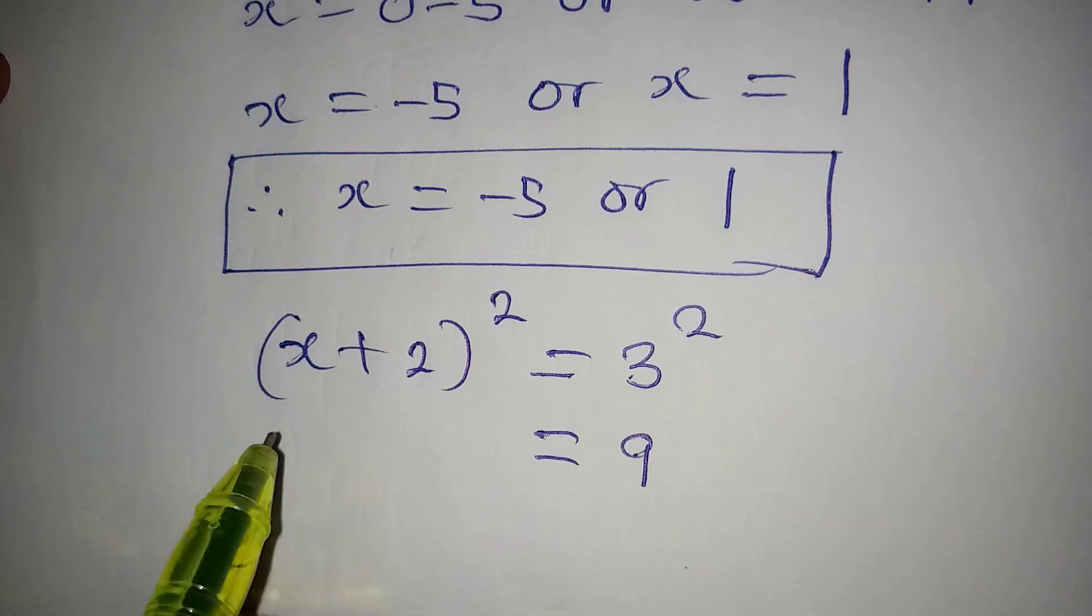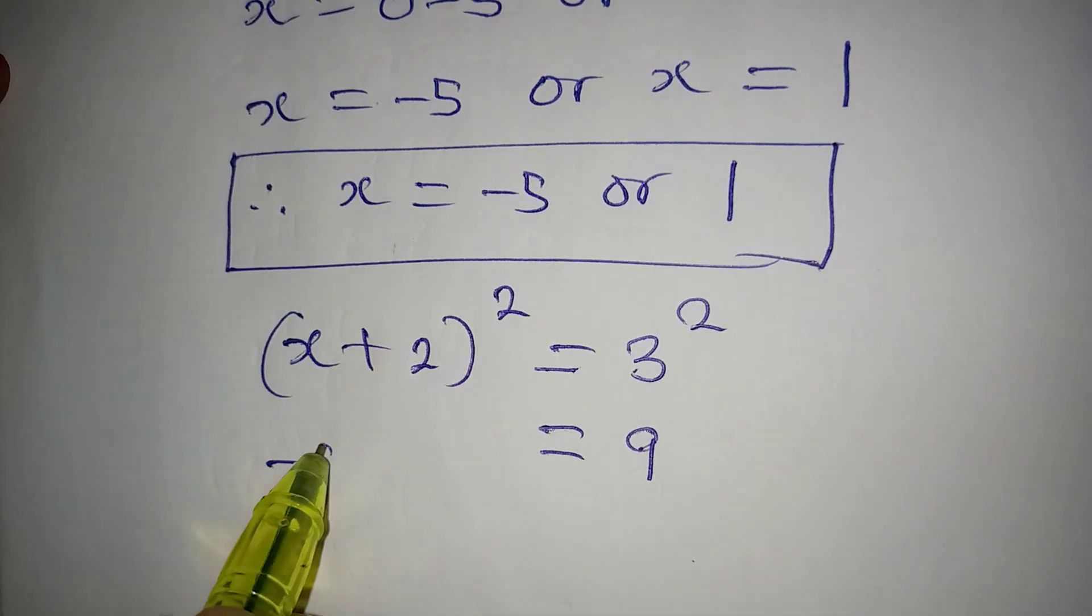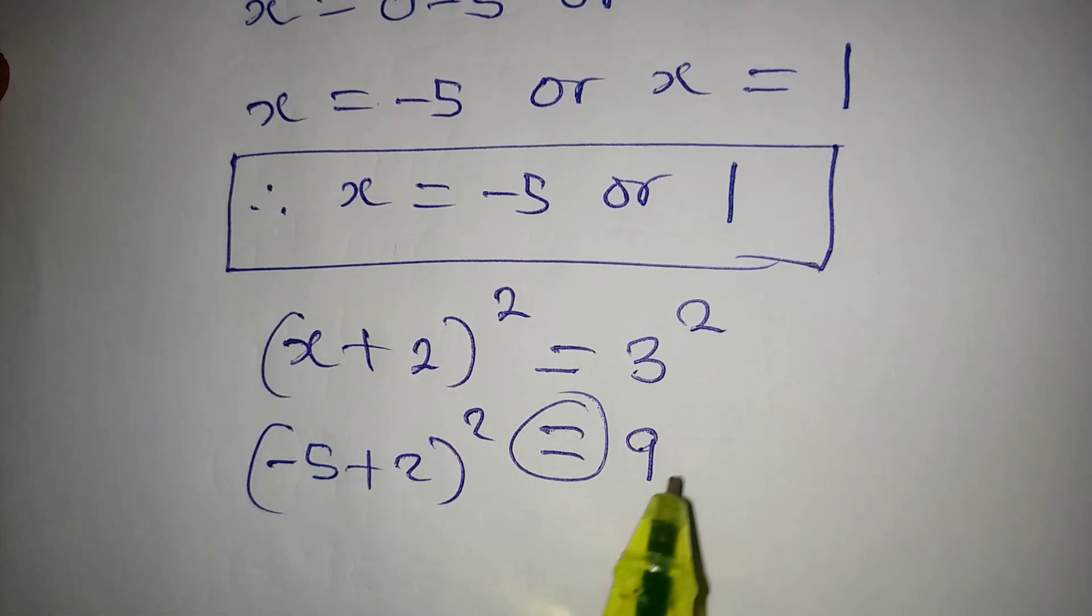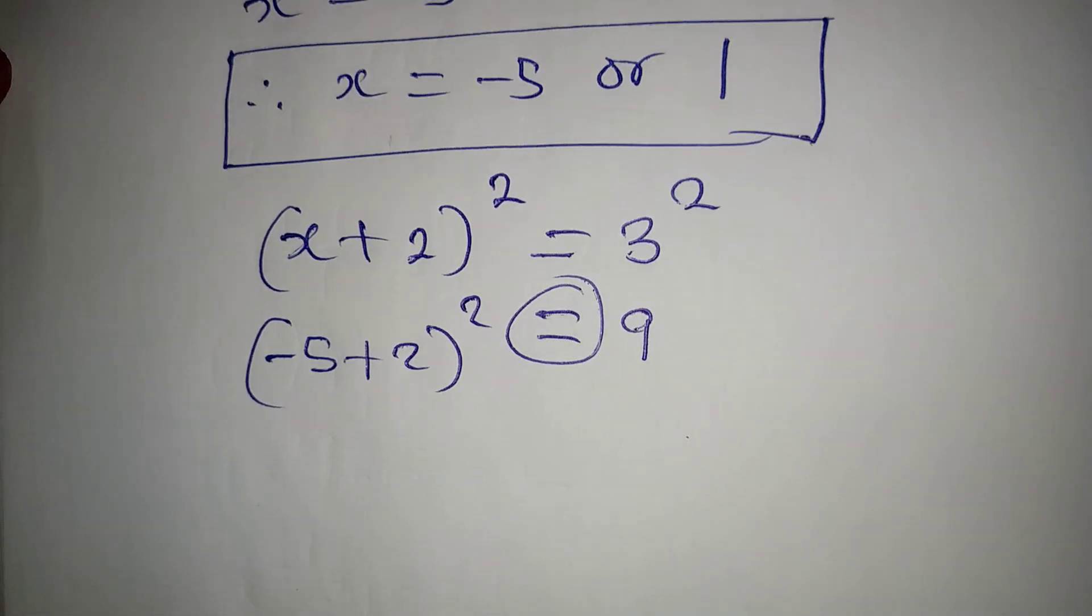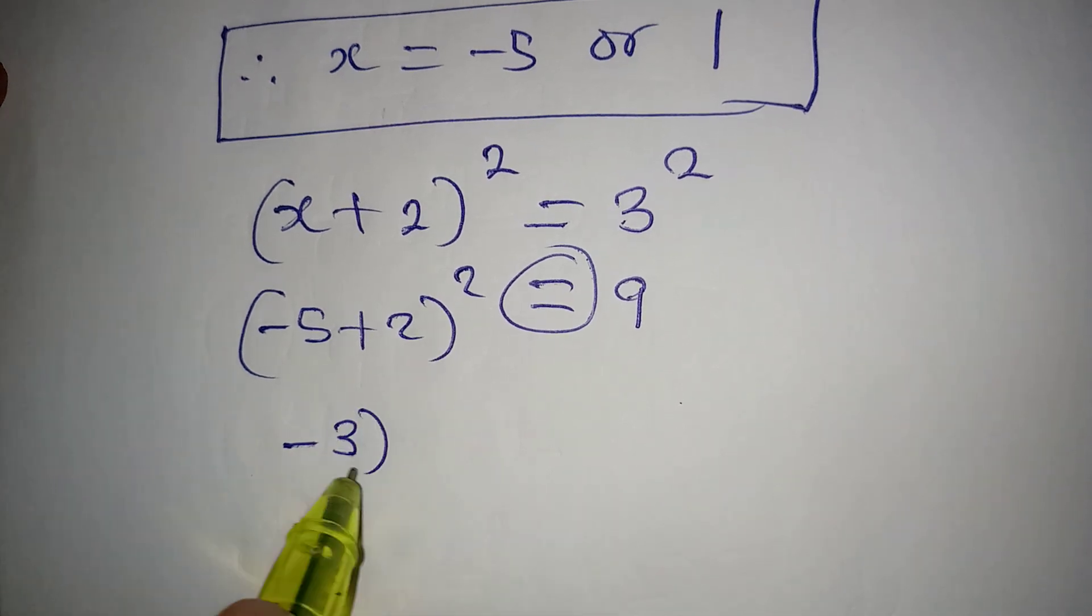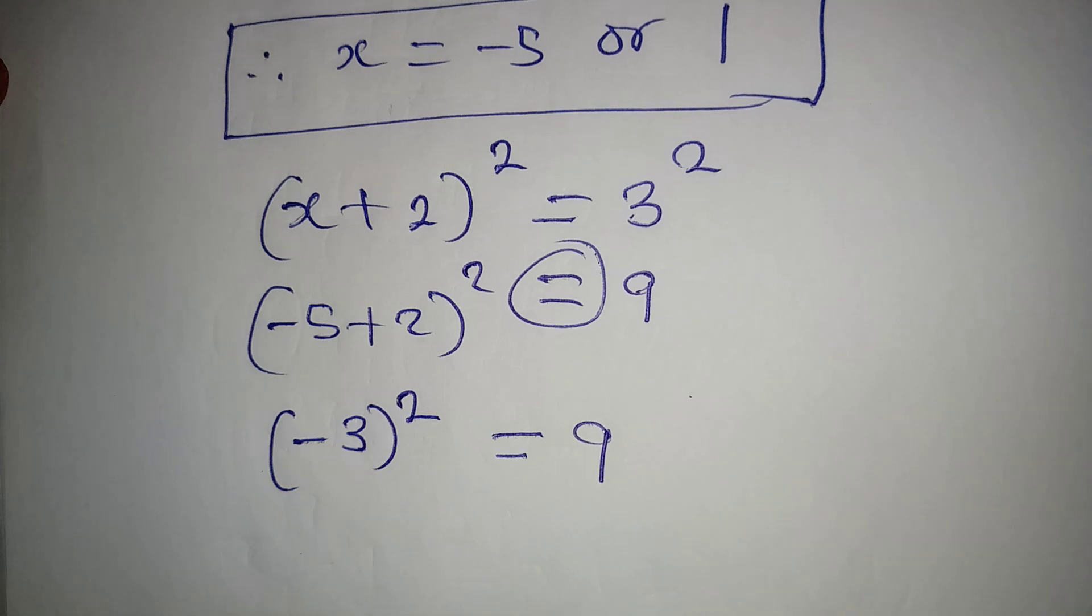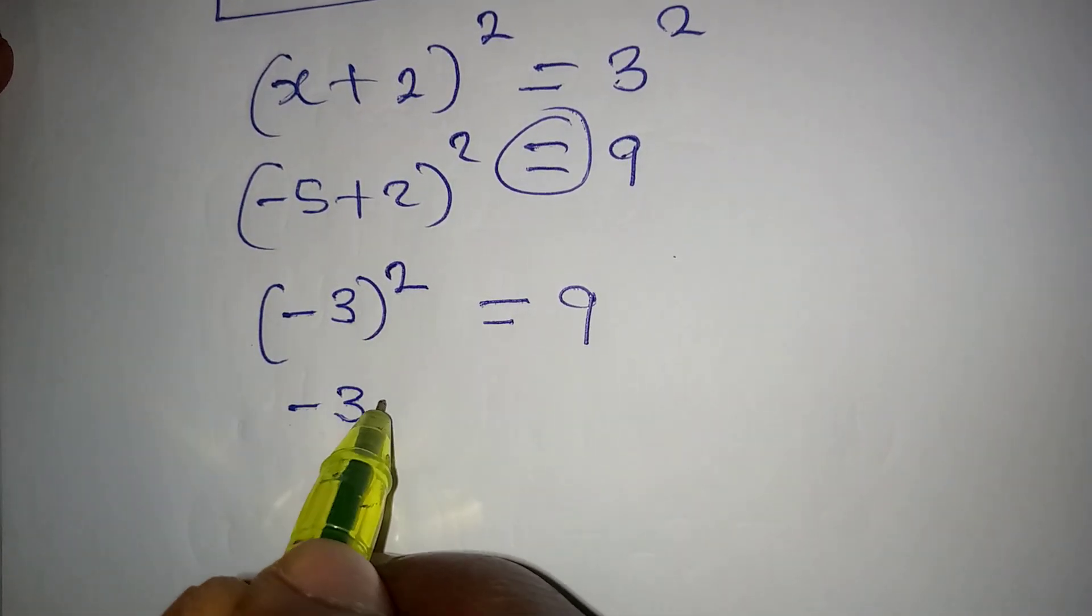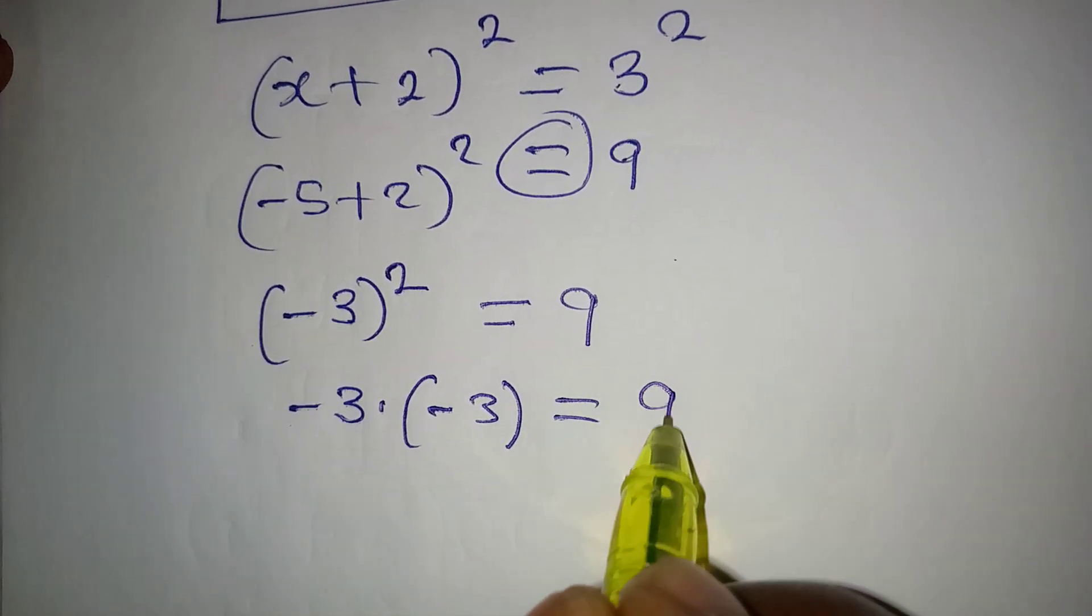Then from here, if we pick minus 5, we have minus 5 plus 2 to the power of 2. Will this be equal to 9? Let's keep going. Now this minus this will give us minus 3 and this is to the power of 2 and this is definitely equal to 9 because this is giving us minus 3 multiplied by minus 3 and this will give us plus 9.